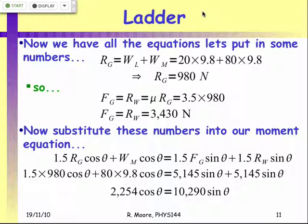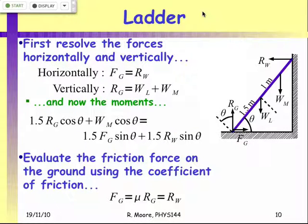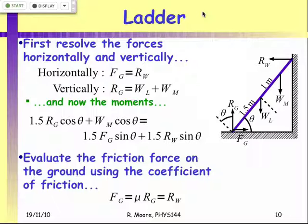At the end of last lecture, we had this ladder problem, where we wanted to calculate what the minimum angle theta is for the ladder not to fall flat. The two conditions were: the sum of the moments about any point had to add to zero, otherwise we'd get an angular acceleration and the ladder would rotate and fall flat. We used the condition that the sum of forces equals zero in x and in y, and the additional condition that the sum of moments also equals zero.